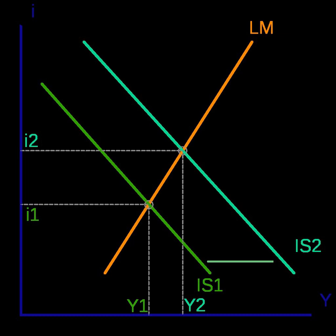For the investment-saving curve, the independent variable is the interest rate and the dependent variable is the level of income. The IS curve is drawn as downward sloping with the interest rate on the vertical axis and GDP on the horizontal axis.